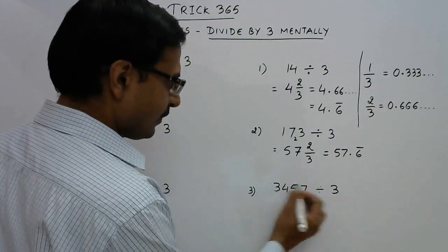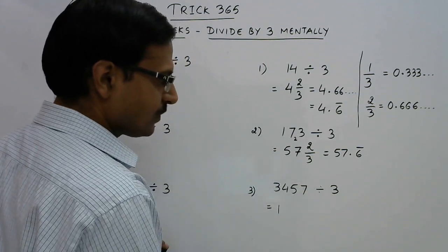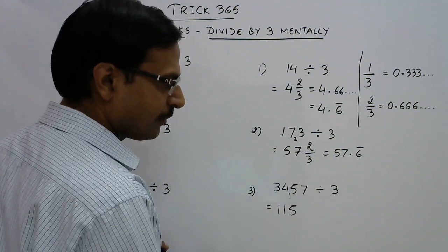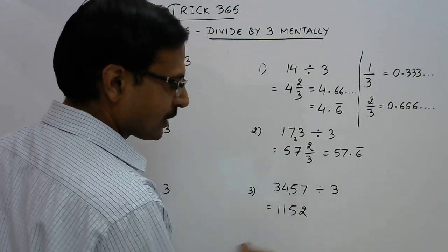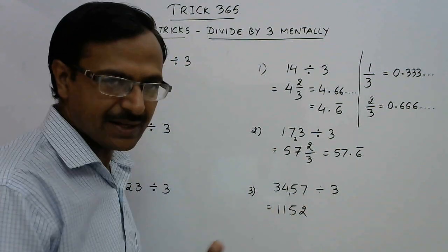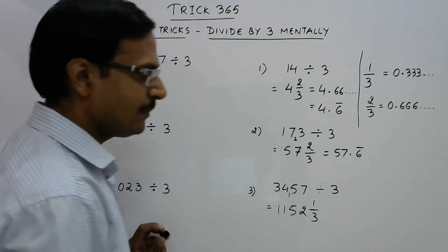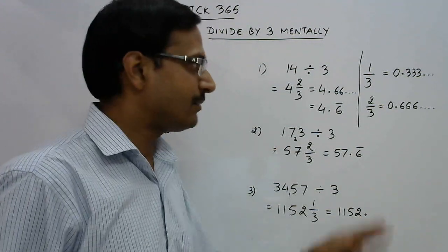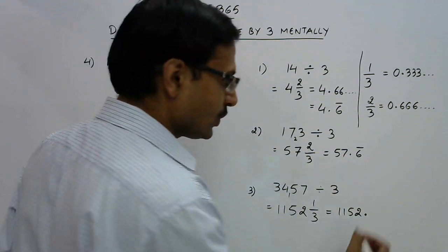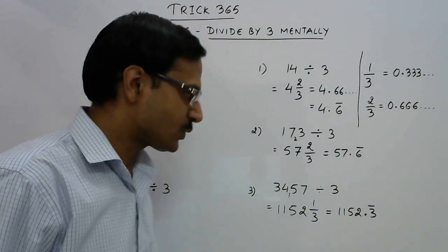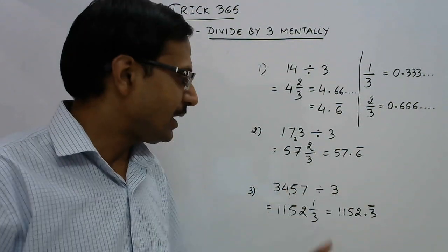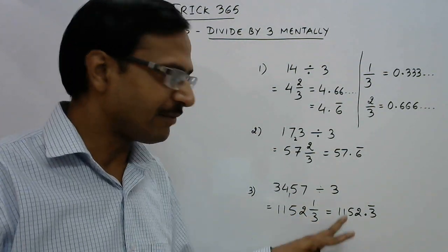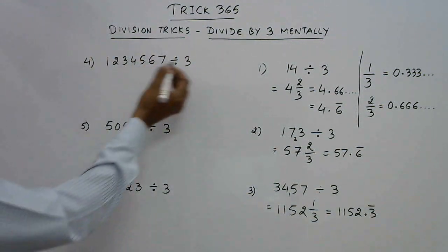Let's have one more example. Three ones are three, so zero is the remainder. Again three ones are three, so one is the remainder. Then fifteen — three fives are fifteen — and three twos are six, leaving only one as remainder. So one by three: the digits 1, 1, 5, 2 appear before the decimal place, and after the decimal place we have a three repeating itself — 3̄. So when you divide 3457 by three, the quotient is 1152 with remainder one, expressed in decimal form as 1152.3̄.